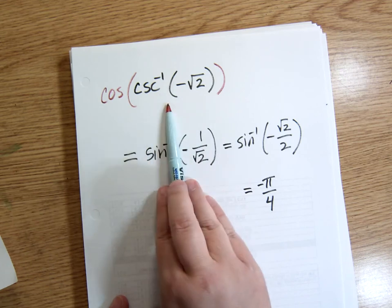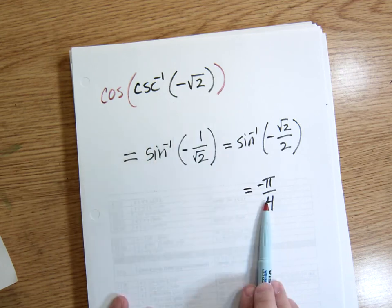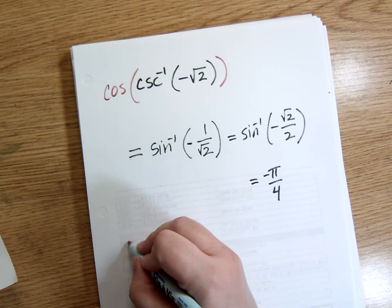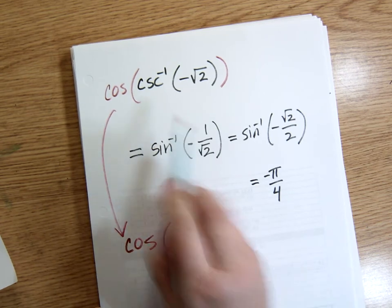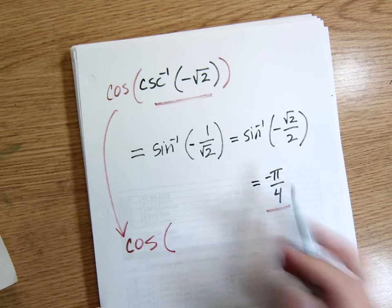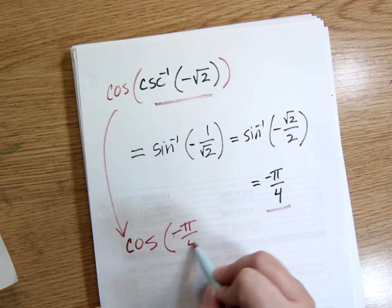Find the inverse cosecant of negative root 2, and that's negative pi over 4. So then what I have, coming straight down from here, is cosine of, remember all of this turned out to be this.